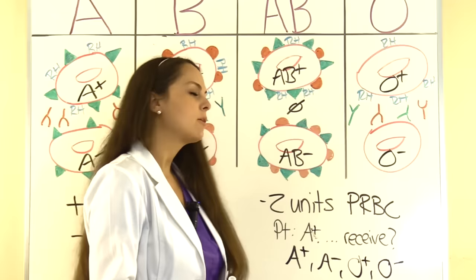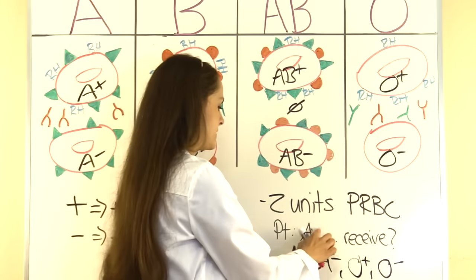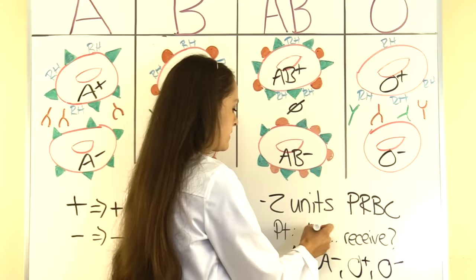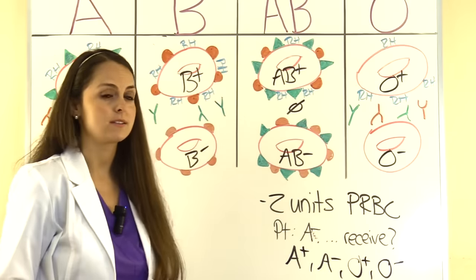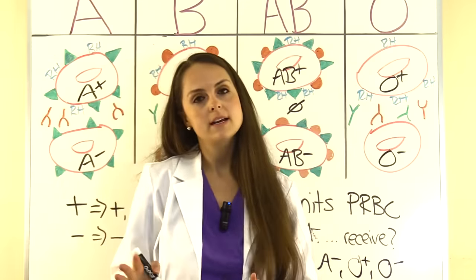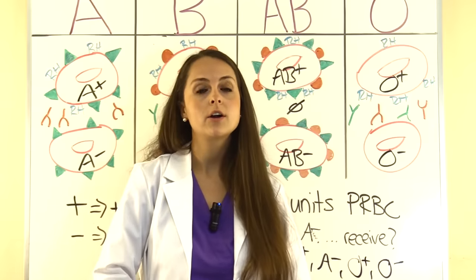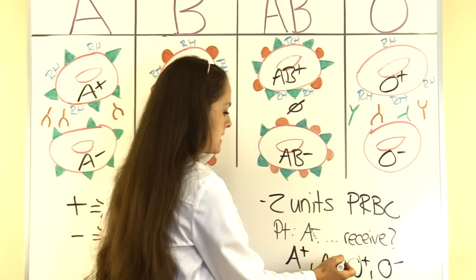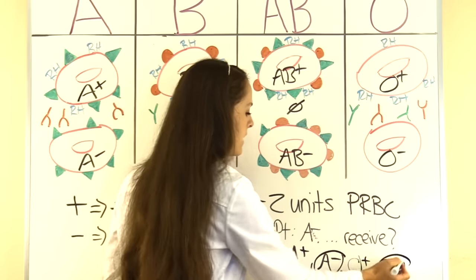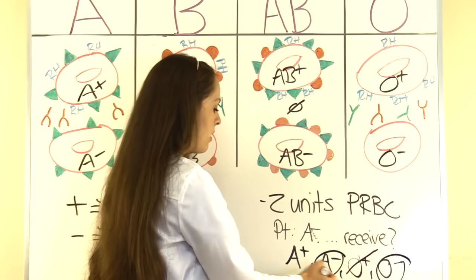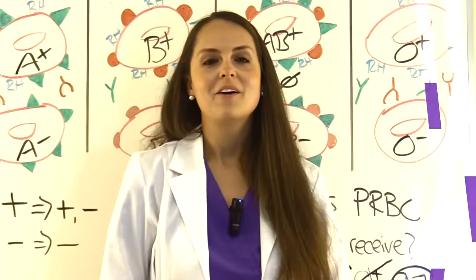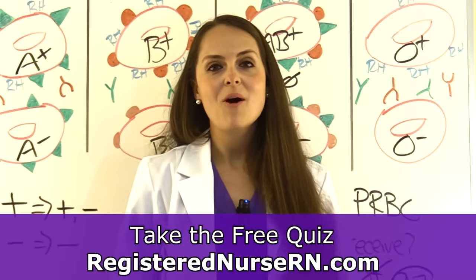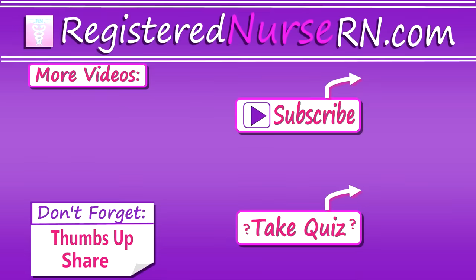Now let's flip it: if our patient was A negative instead, that changes things because an Rh negative patient can only receive other Rh negative blood. So they could only receive A negative and O negative — not O positive or A positive. That wraps up this video on blood typing. Thank you so much for watching. Don't forget to take the free quiz and subscribe to our channel for more videos.